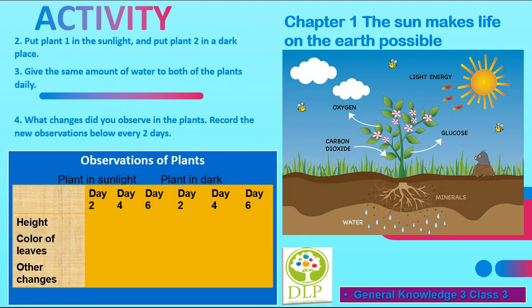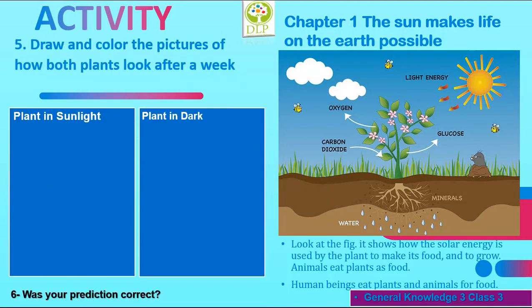Activity 2: Put plant 1 in the sunlight and put plant 2 in a dark place. Give the same amount of water to both plants daily. Observe and record the changes after every 2 days. Activity 3: Draw and color pictures of how both plants look after a week. Think and reply: was your prediction correct? Now that you have practically demonstrated it, look at the figure above.